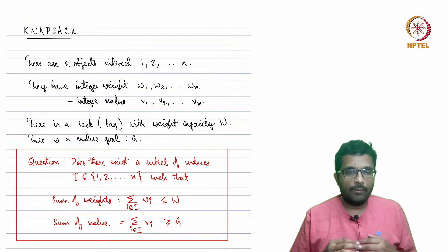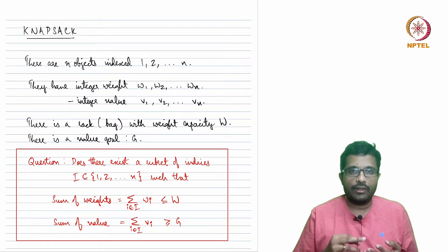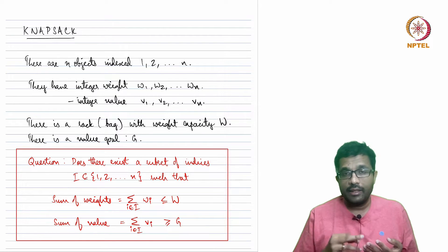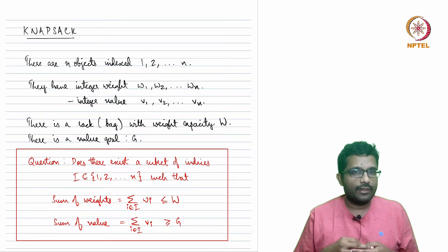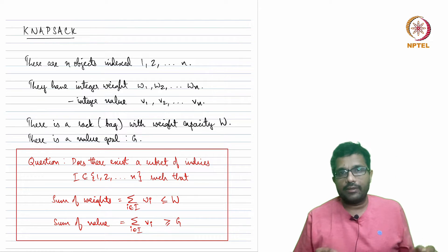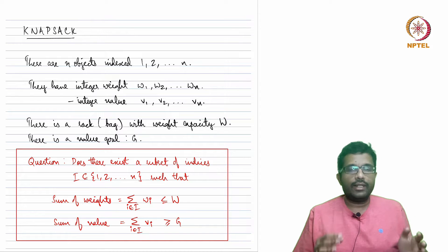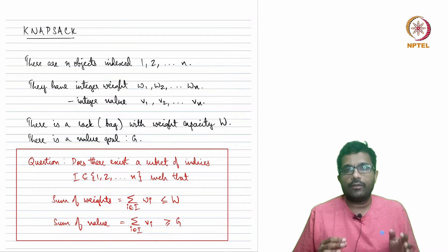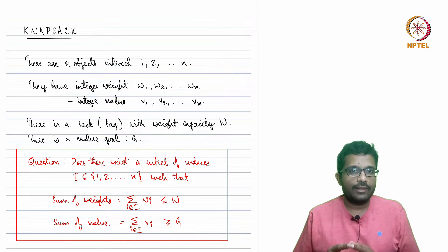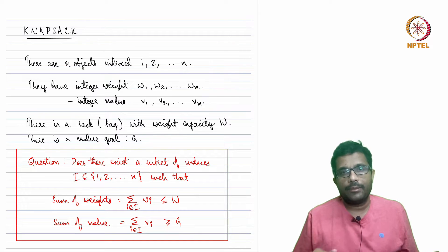We saw problems which are based on Boolean formulas like SAT, 3SAT, etc. We saw problems which are based on graphs: clique, independent set, vertex cover, etc. We saw Subset Sum in the previous lecture, which was asking: given a set of numbers and a target sum, is there a subset of that set which sums to the target sum.